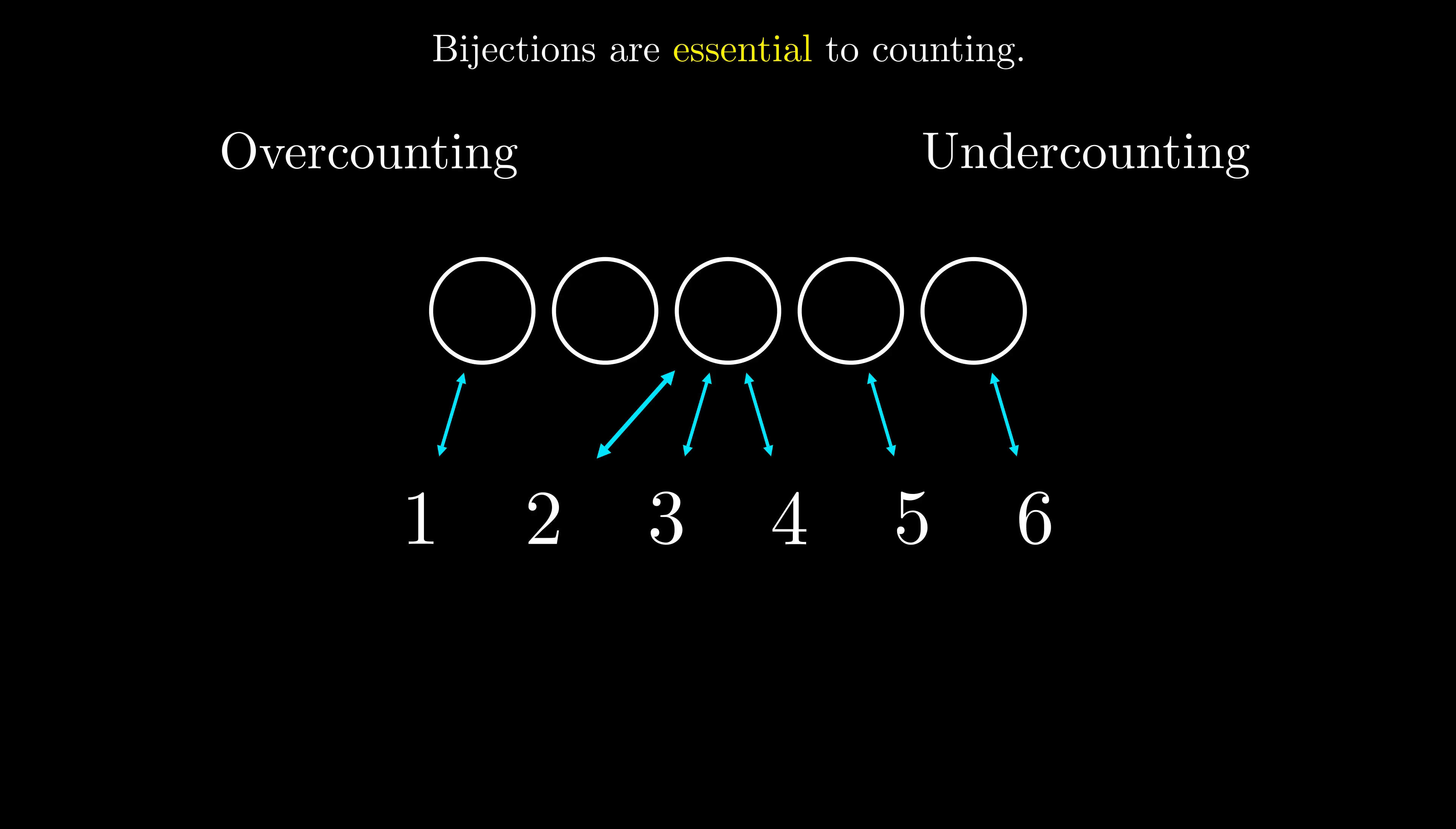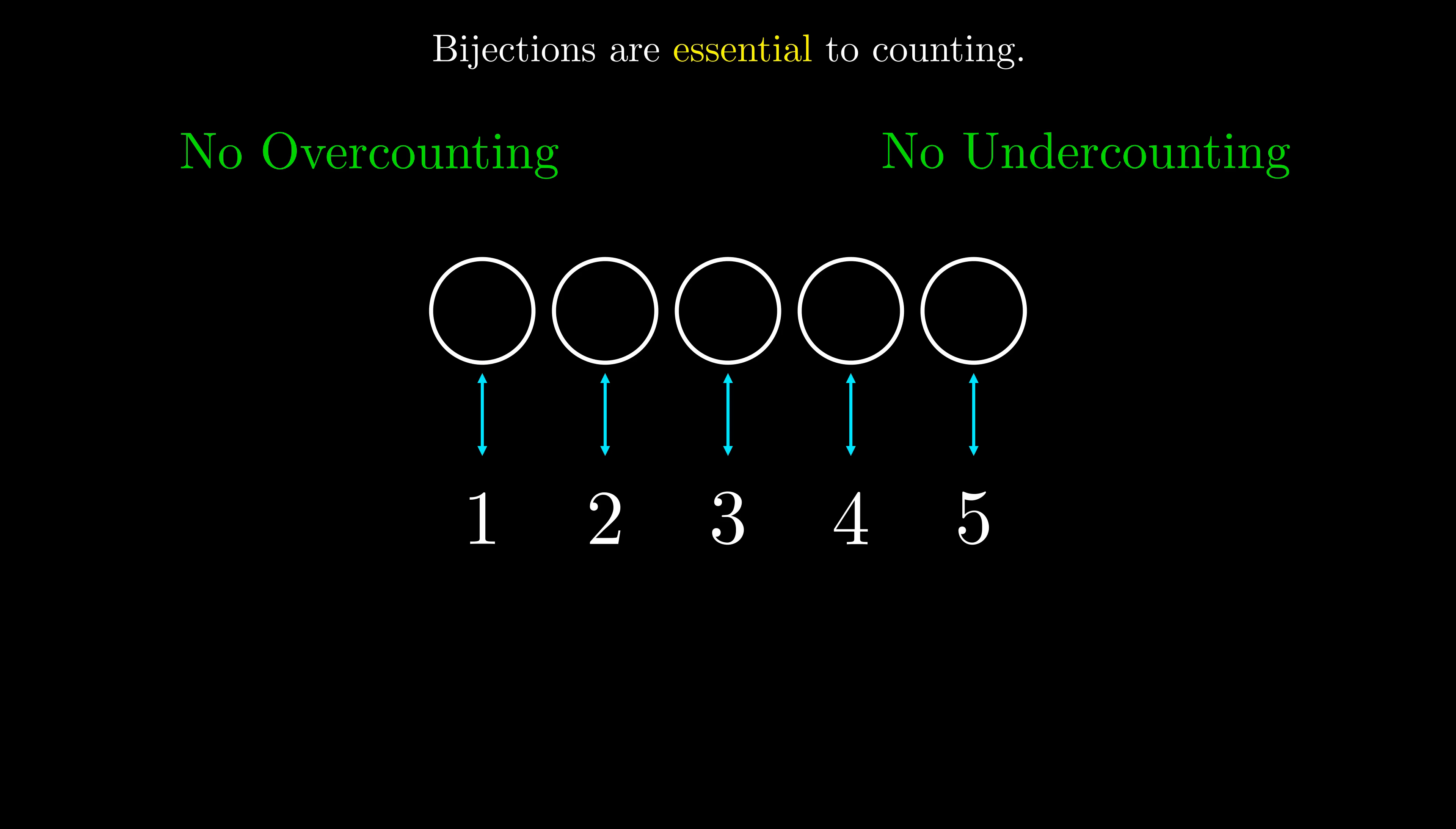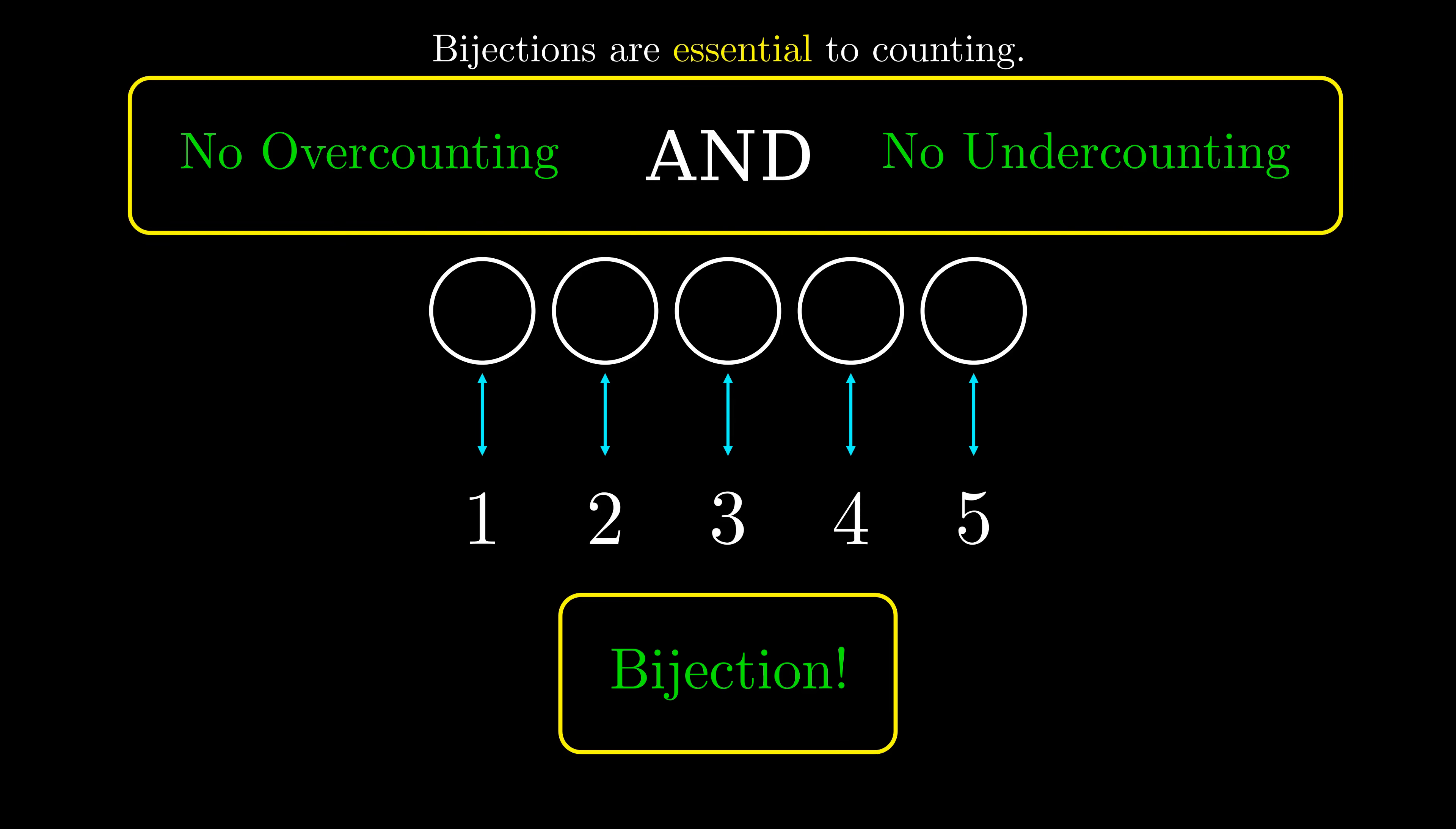So whenever we check our counting answers, we have to check both overcounting and undercounting. It is never enough just to check and fix one of them. Always check for both overcounting and undercounting. Once we are certain we have not overcounted and we have not undercounted, we guarantee that our list has a one-to-one pairing with our counting numbers, which by definition is a bijection. This teaches us that we have two ways of checking our answer to a counting problem: either find a bijection or prove that there is no overcounting and there is no undercounting. You don't need to do both, as they are by definition equivalent.